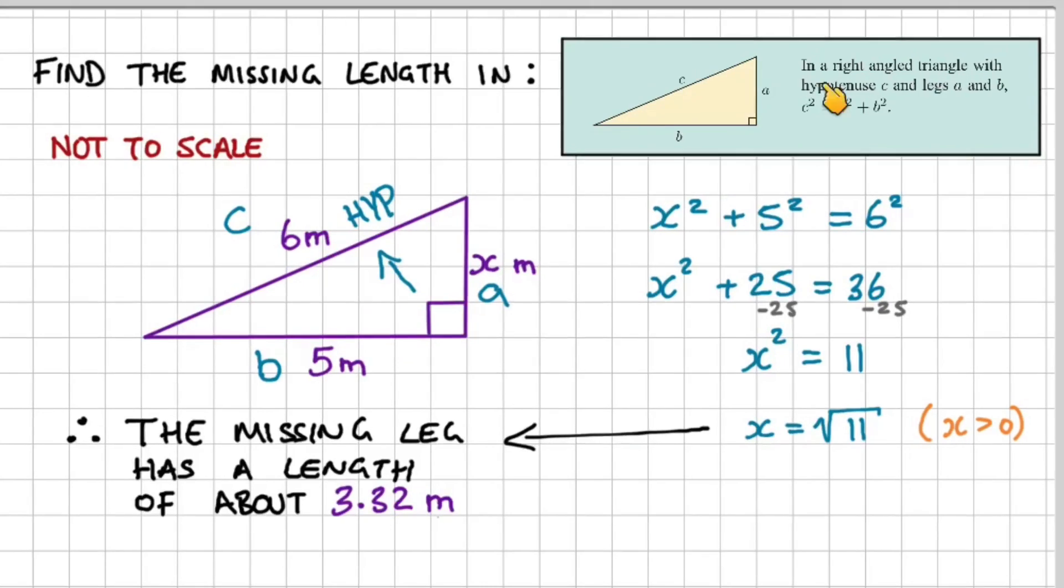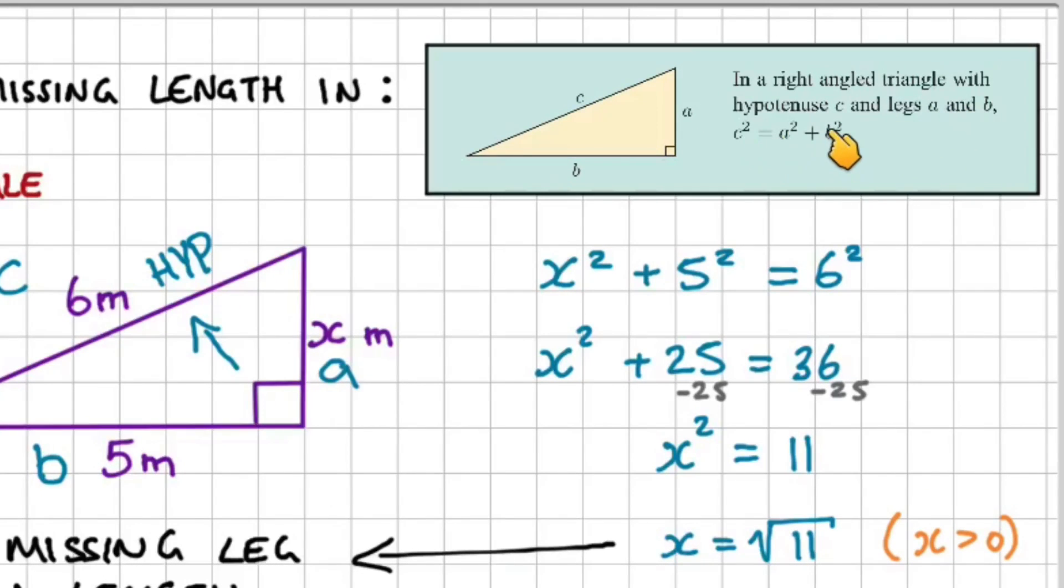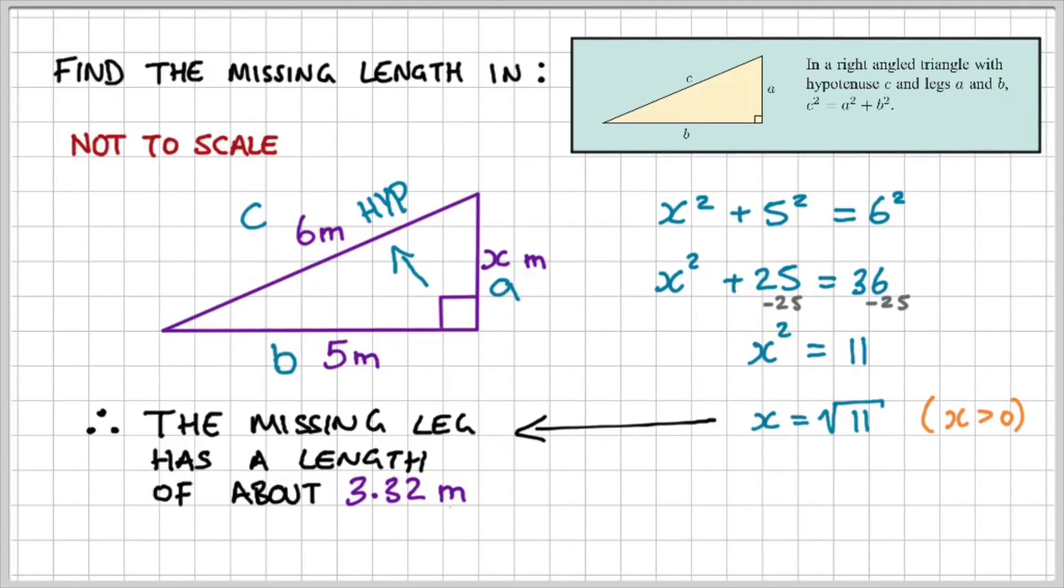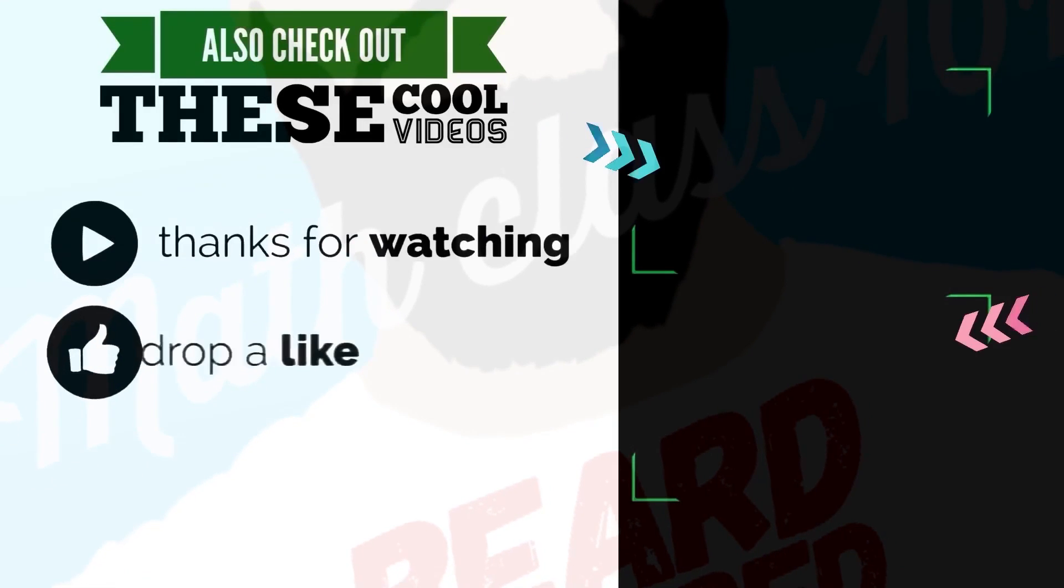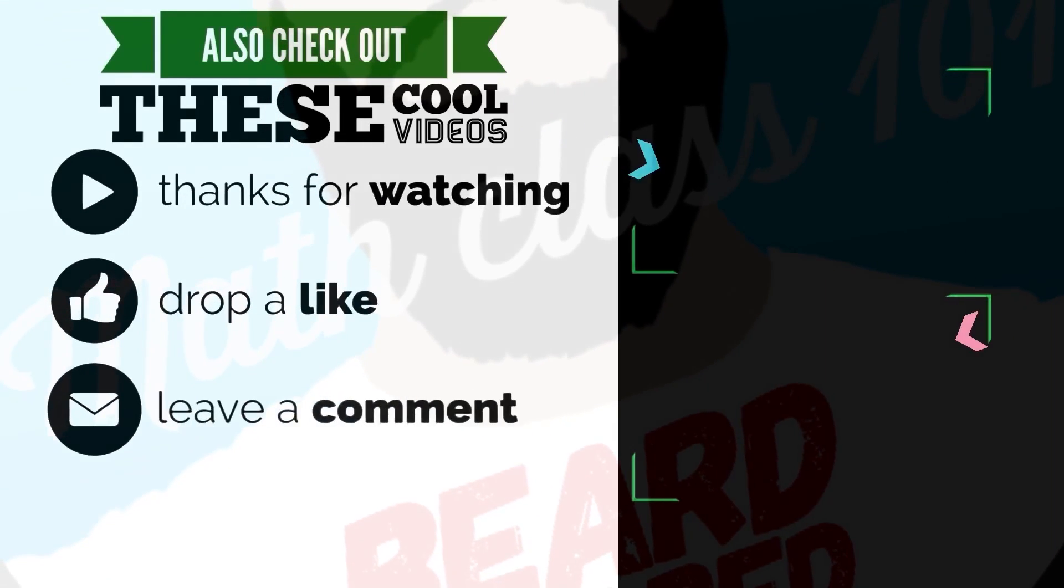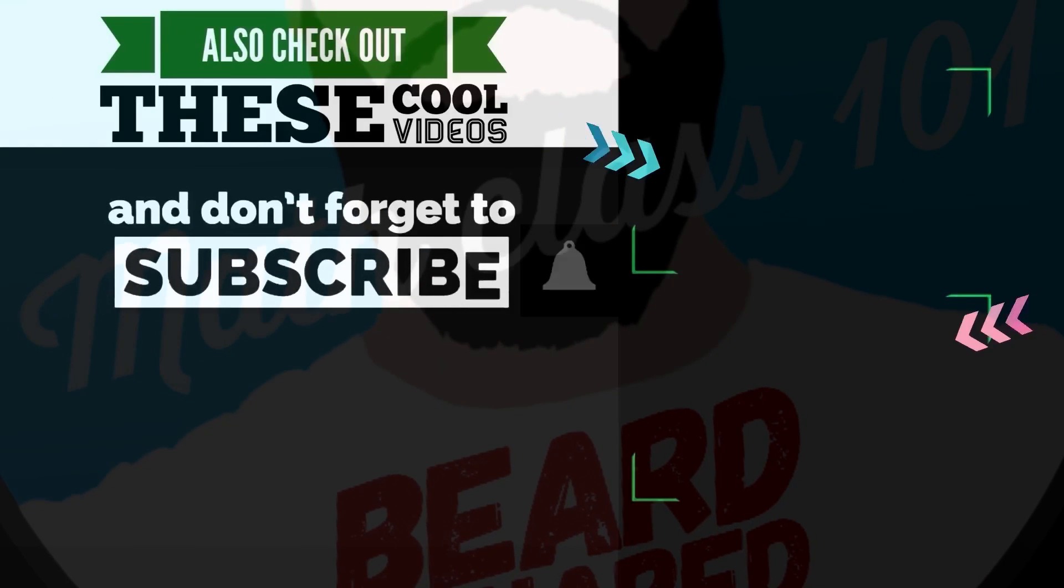So in quick summary, in a right-angled triangle with hypotenuse C and legs A and B, we can write the formula C² = A² + B². In the next video, Pythagoras part 2, I'm going to be solving real life problems using this formula. As always, thank you for watching. If you found the video helpful, then drop me a like. And if you have any questions, put them in the comment section below. And I'll see you in the next one. Bye-bye.